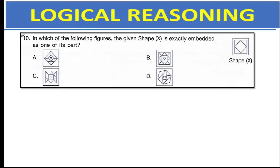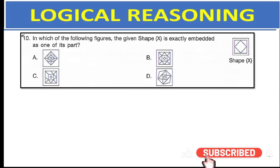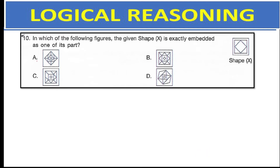The next and last question in the logical reasoning section asks: in which of the following figures is the given shape X exactly embedded as one of its parts? First look for the figure which has two squares — that is options C and B, so cancel out A and D. Then look for the figure which has this diamond. In option C there is no diamond touching these edges, but in option B there is a diamond. Hence, the right answer is option B.